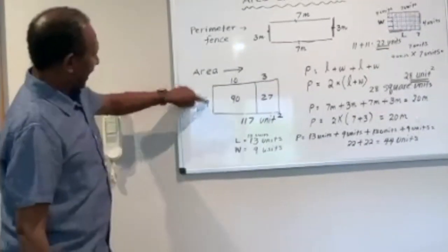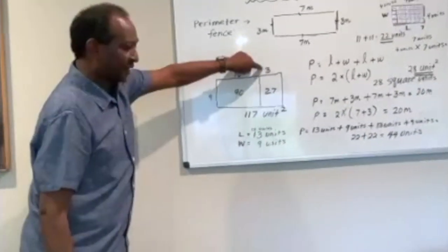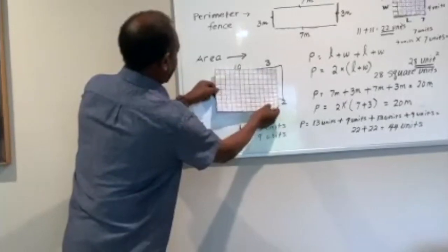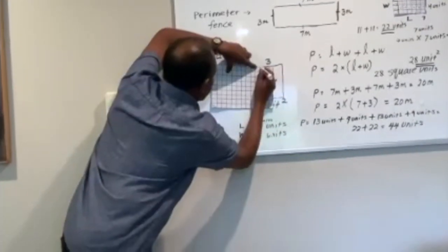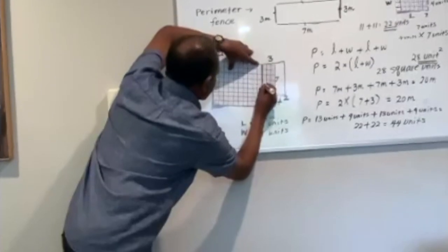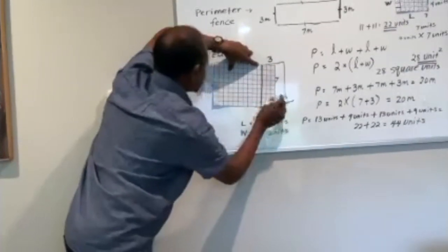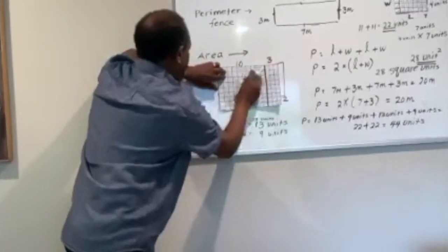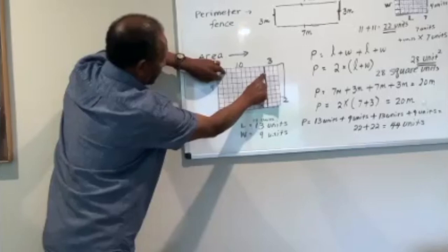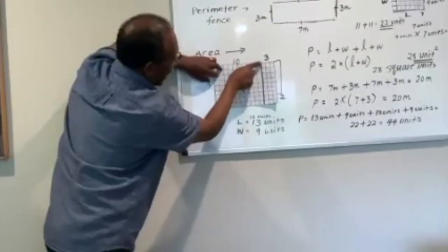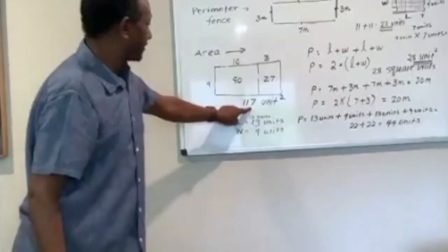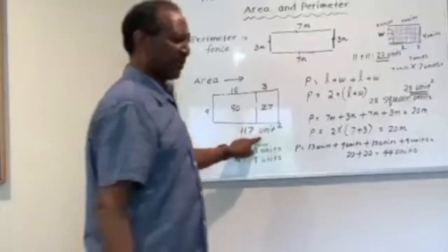9 times 13 — that's how many squares we had in this rectangle. So we have 90 squares and we have 27 squares here. Together, 117 square units.